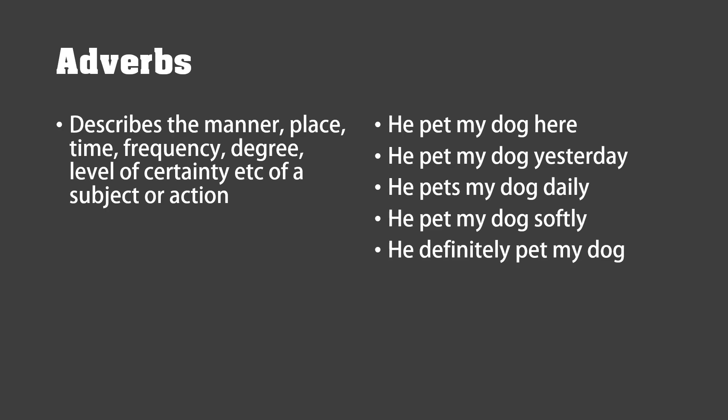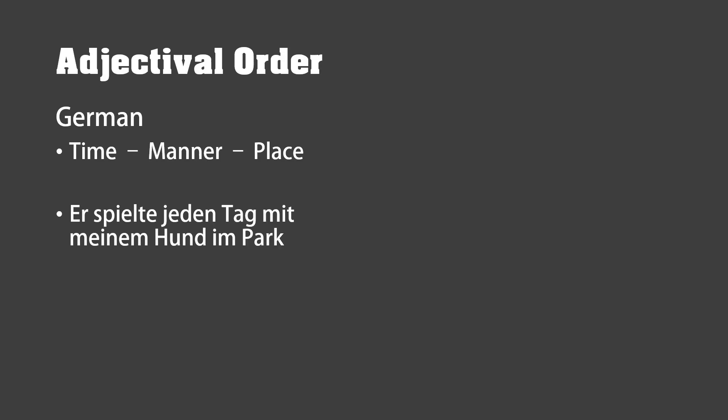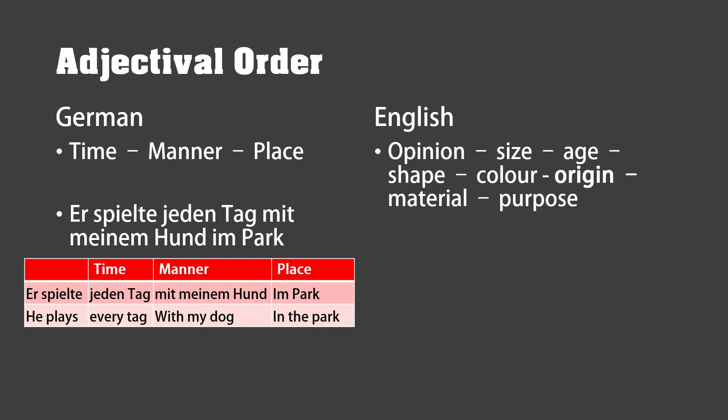Next, adjectival word order. This tells us the order in which adjectives go in based on what they describe. Such as in German, time-manner-place is the order, so adjectives appear in that order, such as this sentence here: 'Ich spielte jeden Tag mit meinem Hund im Park.' This translates to 'he plays every day with my dog in the park.' Here you see time-manner-place. In English, it's a slight bit more complicated.